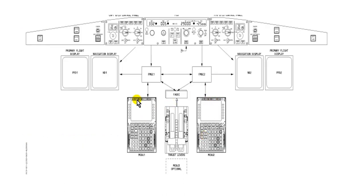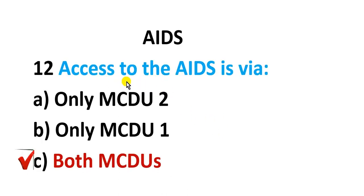Here is MCDU number one and MCDU number two. There is input and feedback through bus A one and two. So the correct answer is both MCDUs. I am waiting for your comments and suggestions. Thank you very much and goodbye.